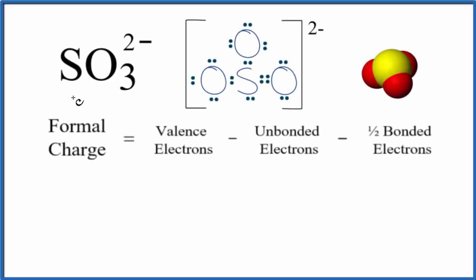In this video, we'll calculate the formal charge for each element in SO3 2-, this is called the sulfite ion. So we start with a Lewis structure, and what formal charges are going to tell us is whether this is the best or most likely Lewis structure for SO3 2-.